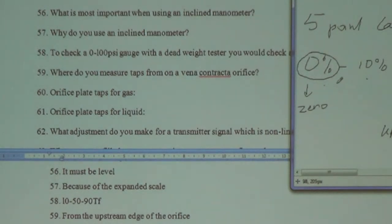So 0% is LRV, 100% is URV, and then you have 10, 50, and 90%.